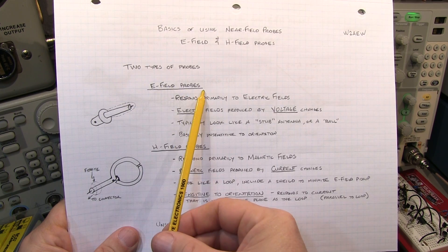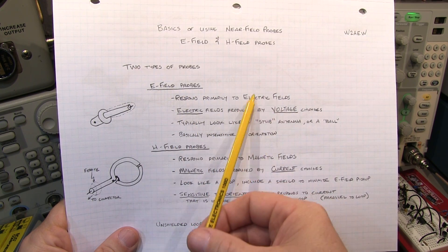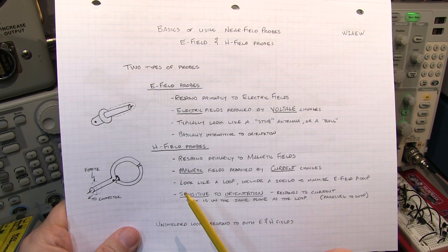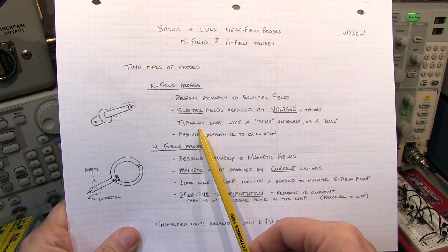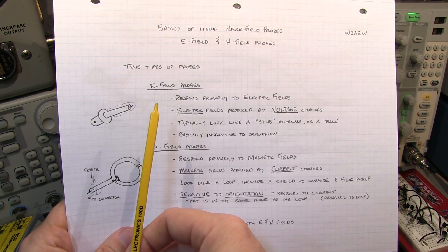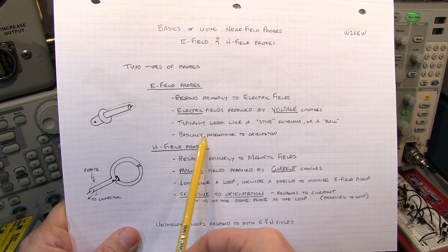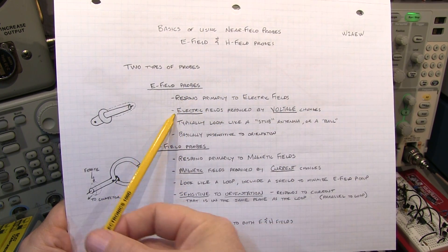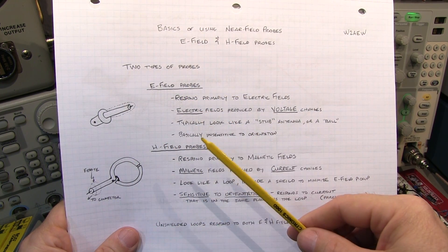The E field probes respond primarily to electric fields. Electric fields are produced by voltage changes in a circuit. They typically look like a stub antenna, or sometimes like a small little ball at the end of the wand. And they're really insensitive to the orientation in terms of how the probe is brought up towards the device under test.